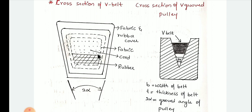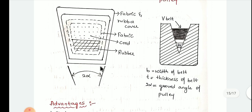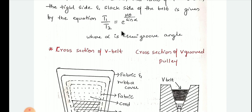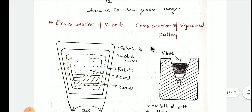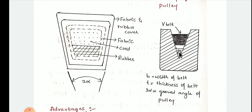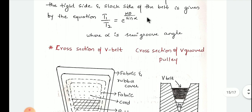For a V-belt drive, the ratio of tension in the tight side and slack side of the belt is given by the equation T1/T2 = e^(μθ/sin α), where alpha is the semi-groove angle. Here, the groove angle may be taken as 2α, and when substituting in the formula, you divide by 2, or use alpha directly. T1 is the tension in the tight side, T2 is the tension in the slack side, theta is the angle of contact between the pulley and the belt, and mu is the coefficient of friction.